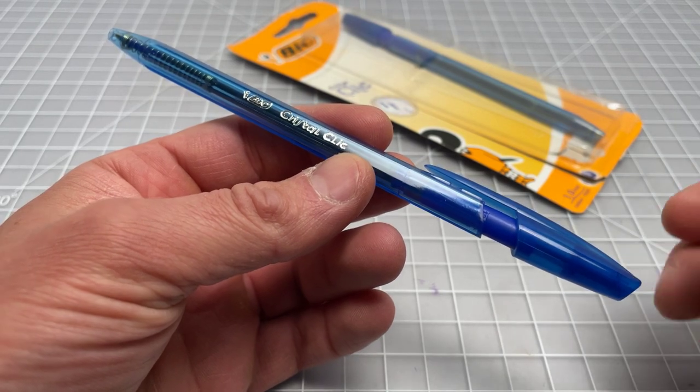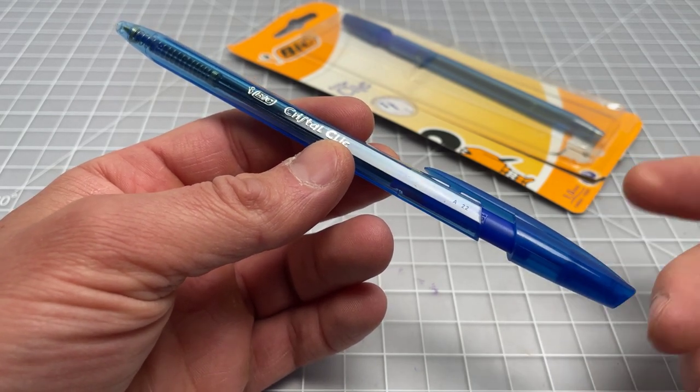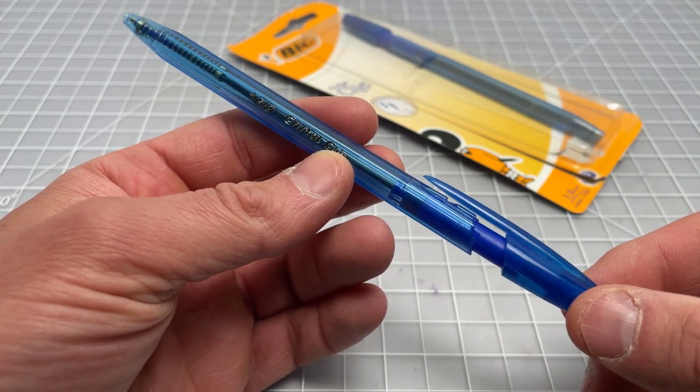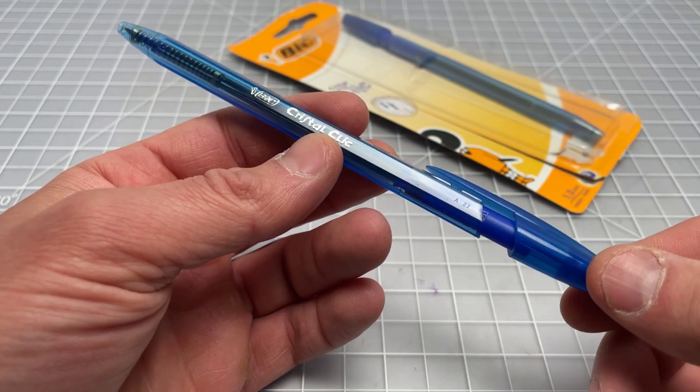So, one question I've actually been asked a few times is if the Bic Crystal, which is a capped pen, is sold in a retractable or click version. And it actually turns out that it is.